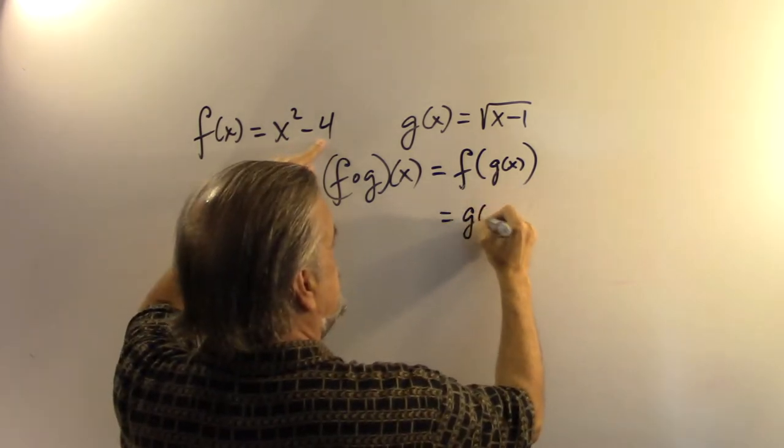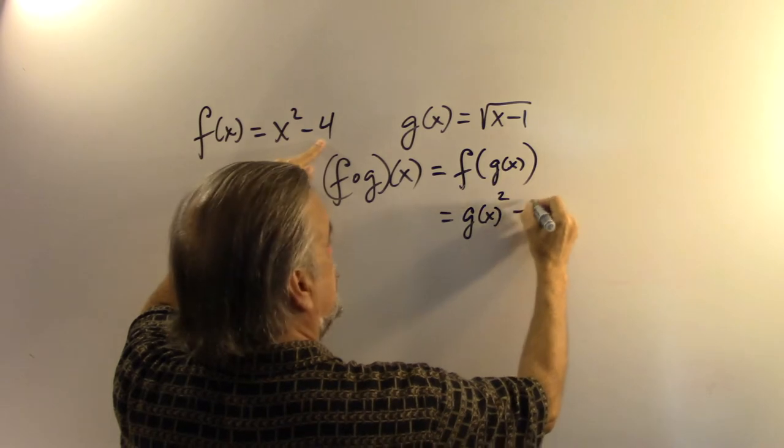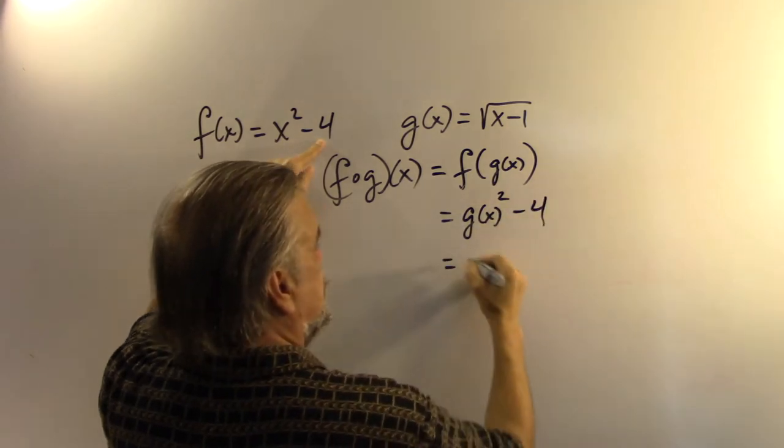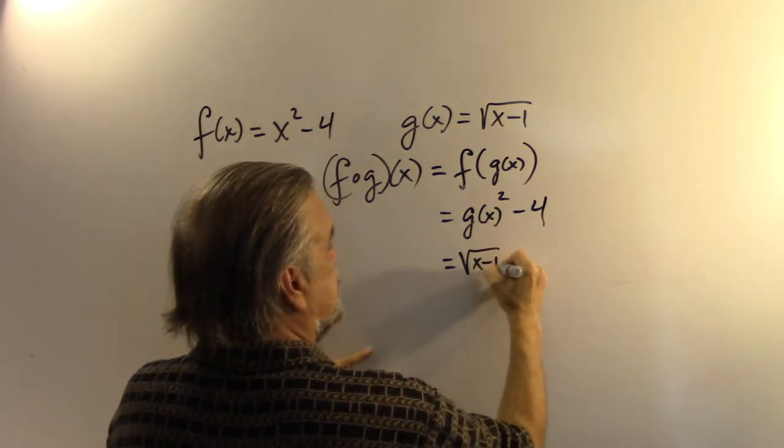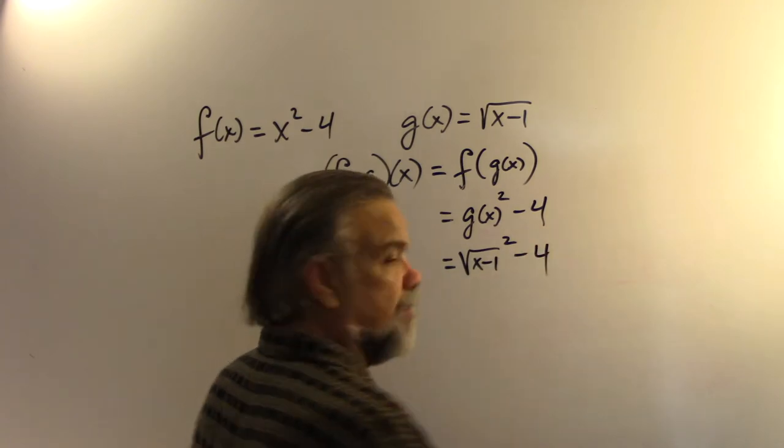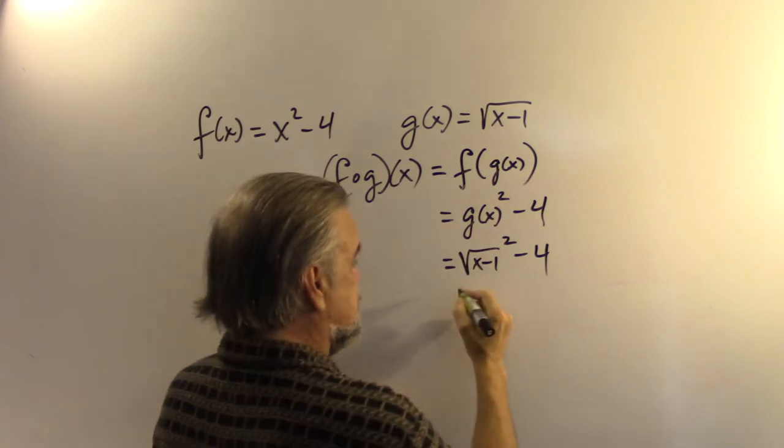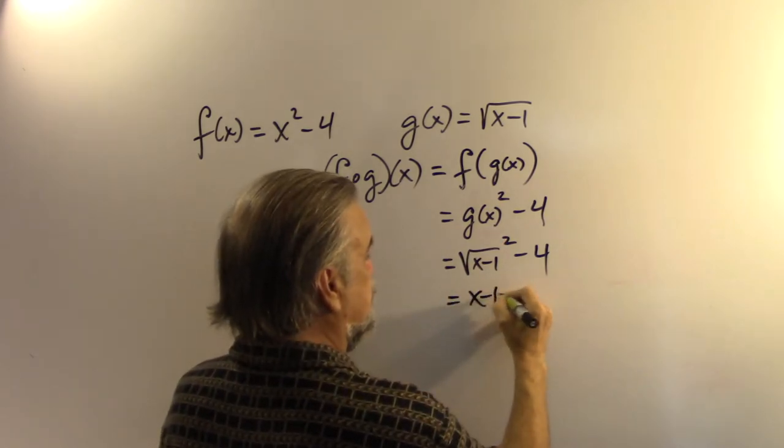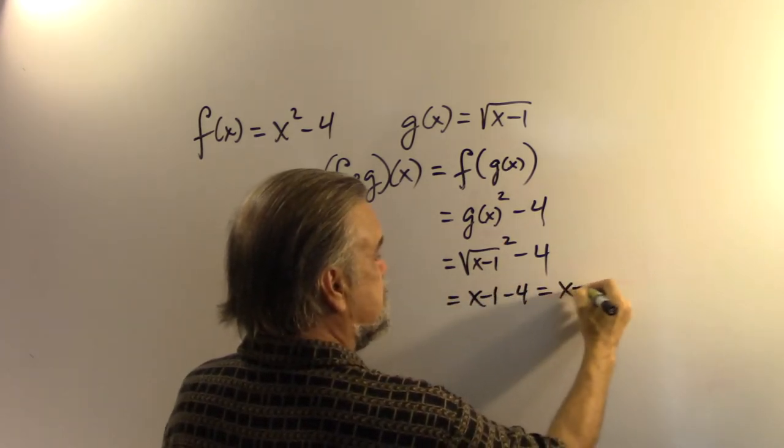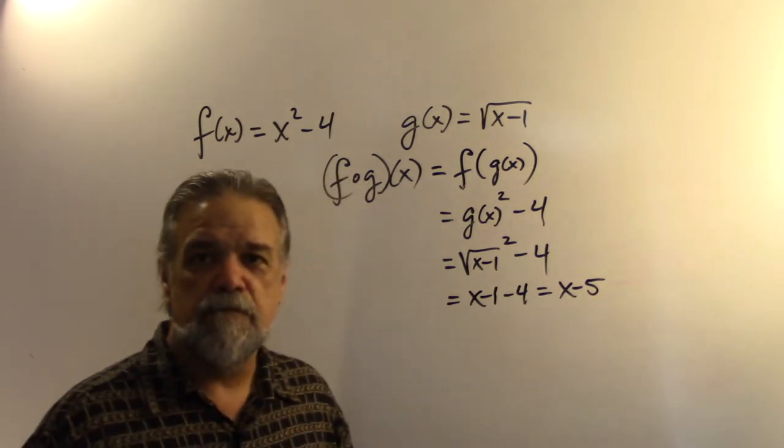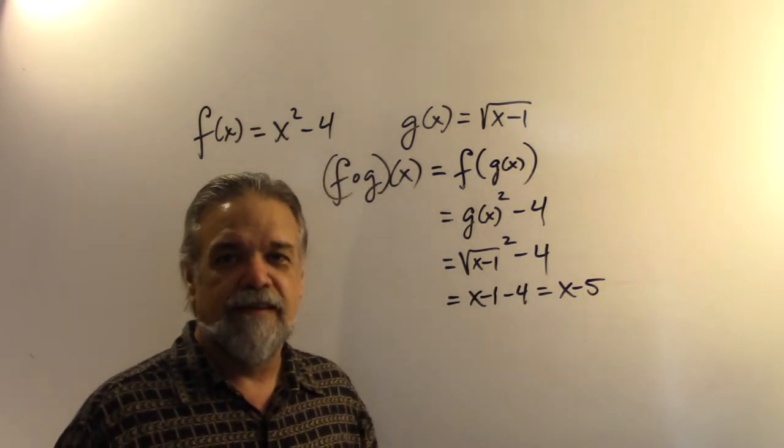So this is going to be g of x squared minus 4, which is the square root of x minus 1 squared minus 4. And then I think we can all agree that this is just going to be x minus 1 minus 4, which is x minus 5. We all happy with that? For now.